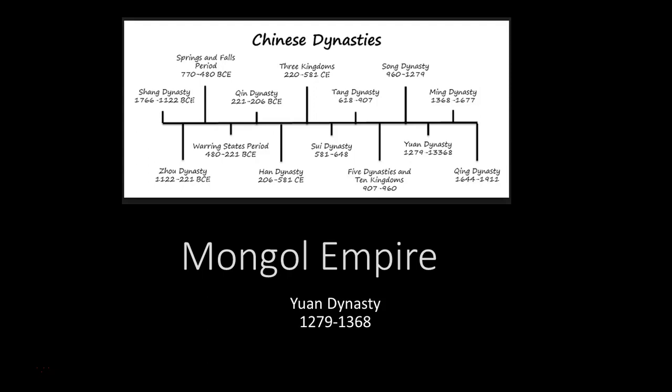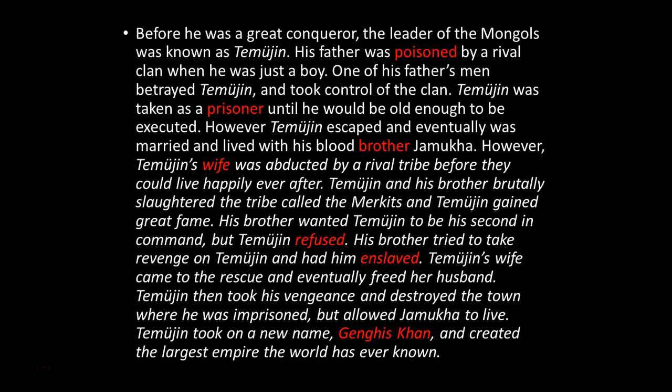We start with some Chinese dynasties, beginning with the Mongol Empire, also known as the Yuan Dynasty. To understand that, you need to know about Temujin, who is Genghis Khan. He was born into war between rival tribes — the Merkits poisoned his father, he was taken prisoner by his own people as a young boy, and he made friends with his blood brother Jamukha. He was enslaved as many as three different times.